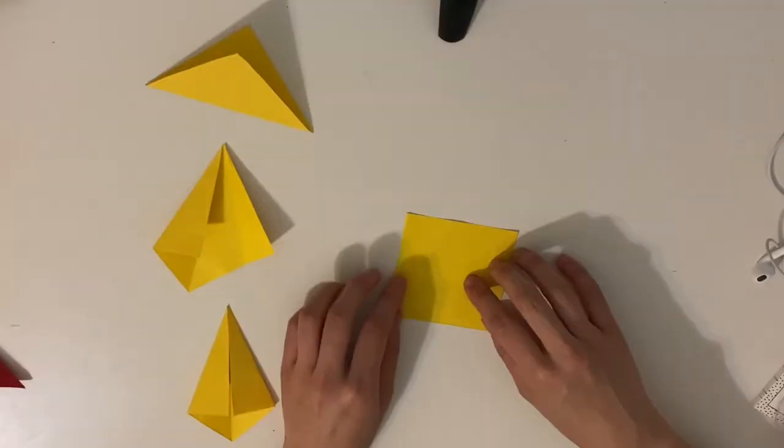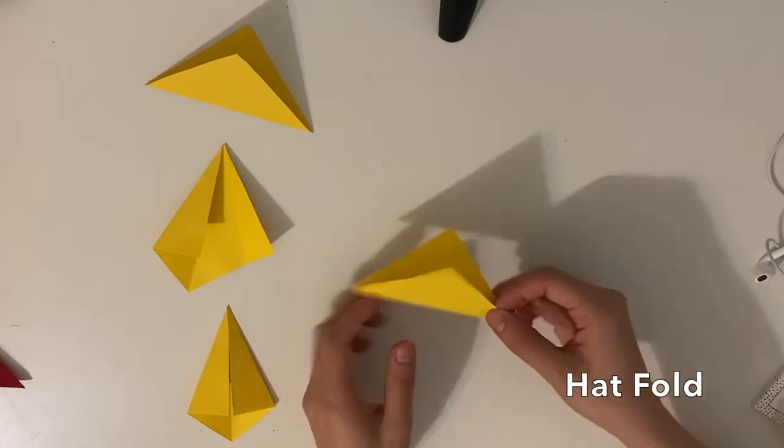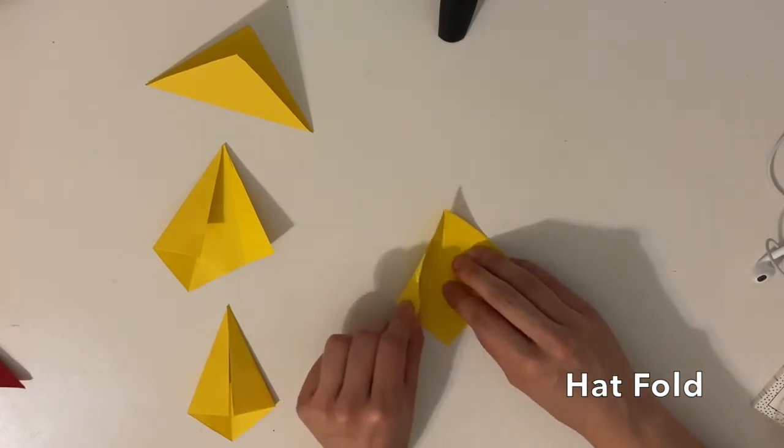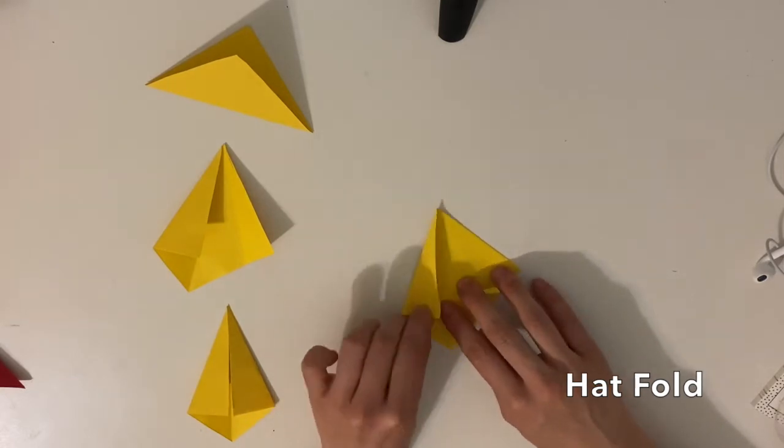Second was the kite fold. Have the corners of your square meet, open it up and use that middle crease as your guide to pull the side corner down and into the middle, and then do the same to the other side.